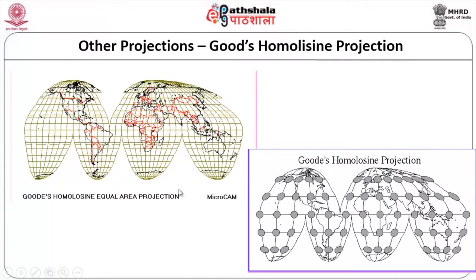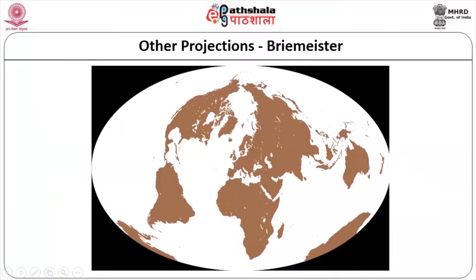Goode's homolosine projection: you can see the shape is near-perfect circle close to the equator, but as you go away from it the shape gets increasingly distorted — slightly distorted at mid-latitudes and highly distorted further out. This method preserves equal area, but the shape will be slightly distorted. Bremister is another projection where he also considers the entire area as an elliptical object, though it is not very popular.